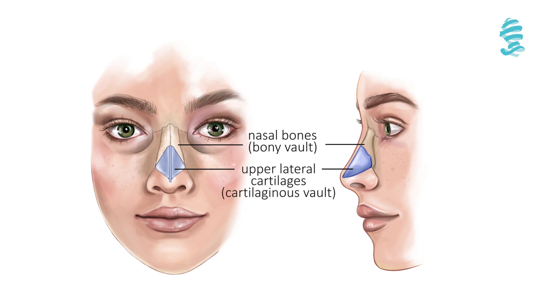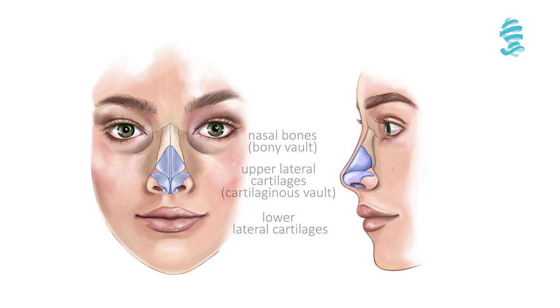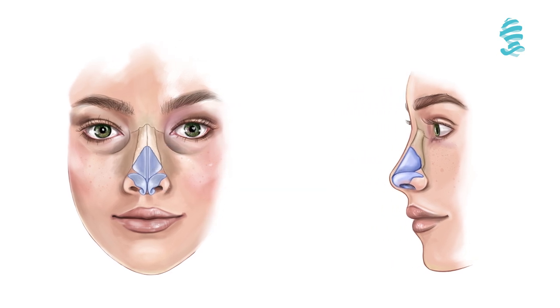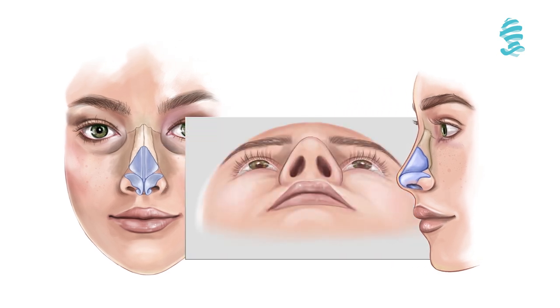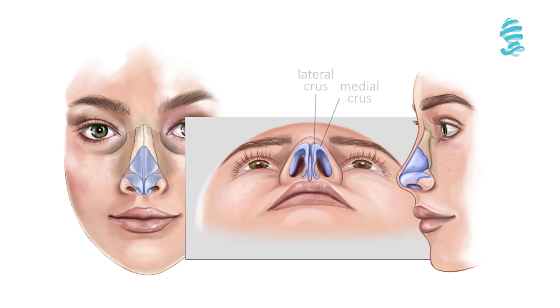The lower third is composed of lower lateral cartilages — namely the lateral crura and medial crura — and surrounding soft tissues, and it is known as the tip.